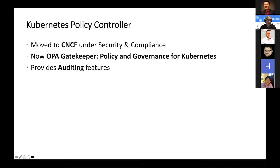What I've been calling Kubernetes policy controller has moved to the CNCF under the security and compliance umbrella — it's now called OPA Gatekeeper. OPA is the general purpose policy agent; Gatekeeper is the specific implementation of OPA for Kubernetes. It also allows you to either make a hard deny or simply audit — putting a policy in place that audits what's in your environment and captures that information from your logs.